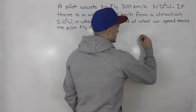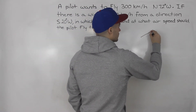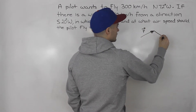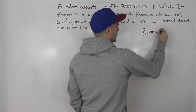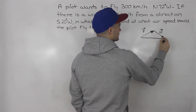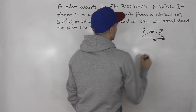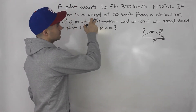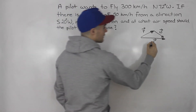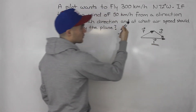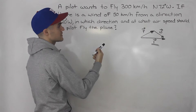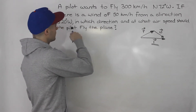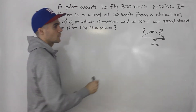Notice in this question, if we draw that general diagram, we got the plane, the wind, and then the resultant. Notice that we're given the resultant because it says that a pilot wants to fly 300 kilometers per hour north 72 degrees west — that's the resultant velocity. And we're also given the wind velocity: 50 kilometers per hour from a direction south 20 degrees west.